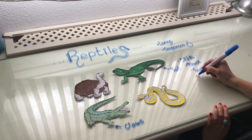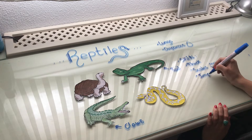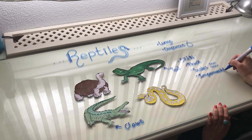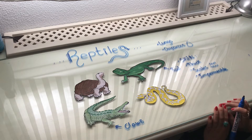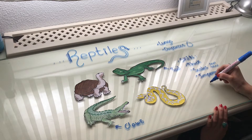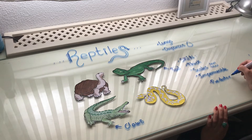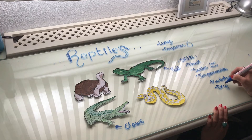Their skin is also impermeable and has scales. These three characteristics — being thick, having scales, and being impermeable — protect them from predators and protect them from drying out.